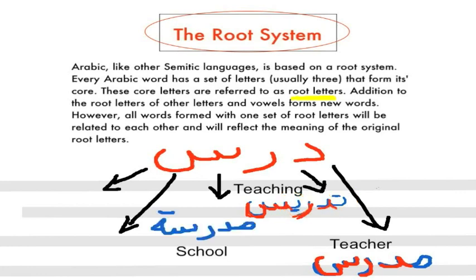The next example is madrasa. The root letters are dal, ra, sin, and madrasa means school. Here you can see the root letters are next to each other, and the letter meme and ta marbuta are added to the word darrasa to change the meaning.